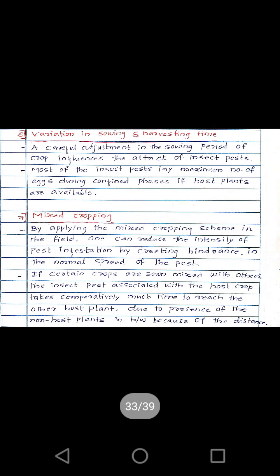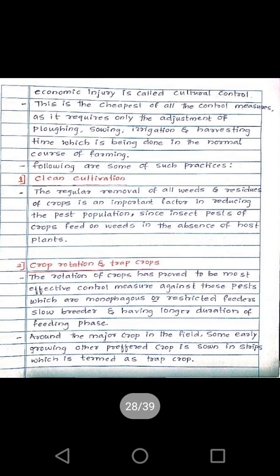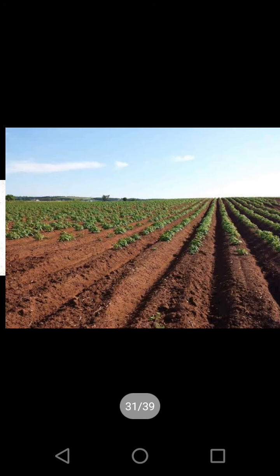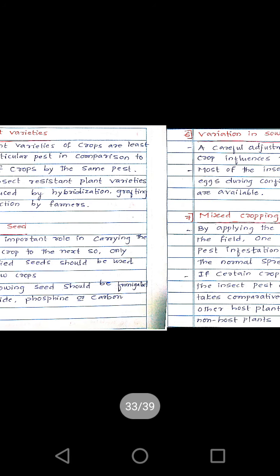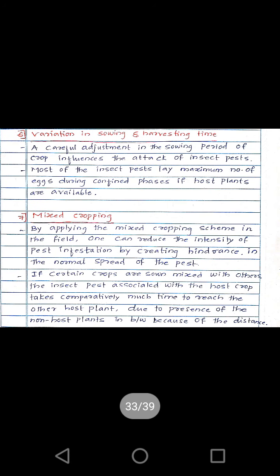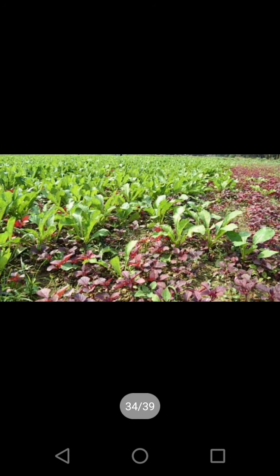These are the methods used in the cultural method of insect pest control: clean cultivation, crop rotation and trap crops, tilling or cultivating of soil, use of resistant varieties, use of clean seed, variation in sowing and harvesting time, and mixed cropping. This concludes the cultural method of insect control.